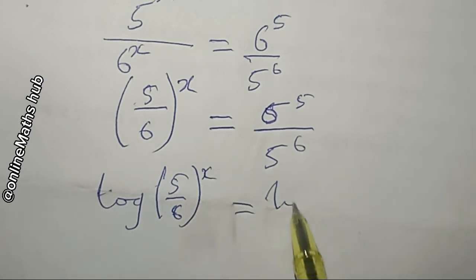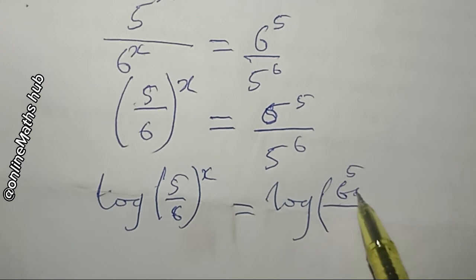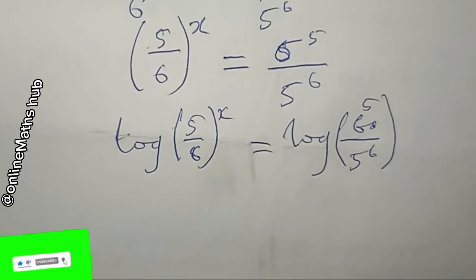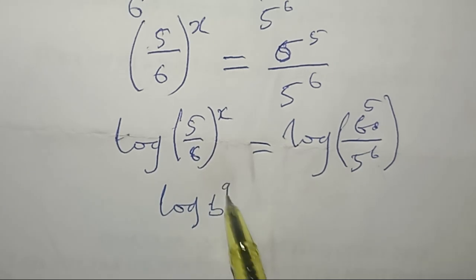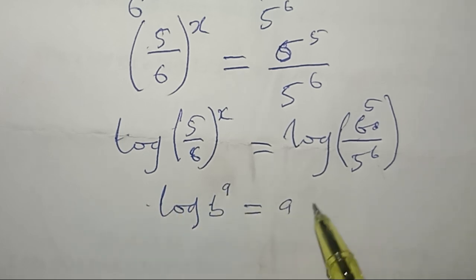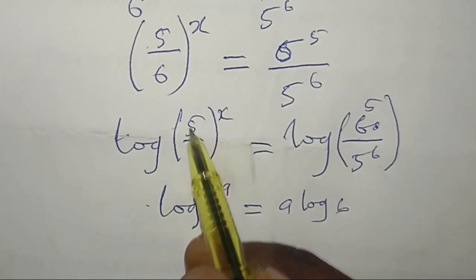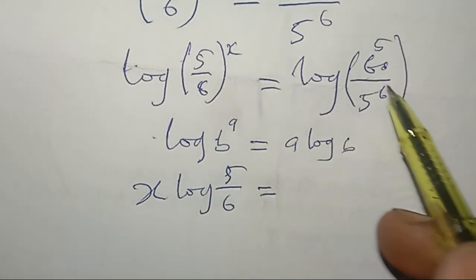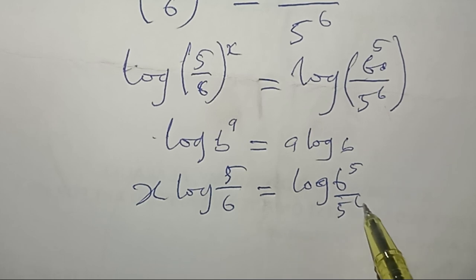Utilizing the log power rule — which says that log of b to the power a equals a times log b — the left hand side becomes x times log(5/6), and the right hand side is log of (6 power 5 divided by 5 power 6).